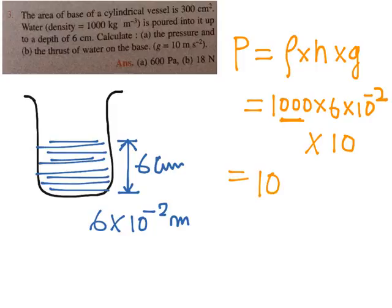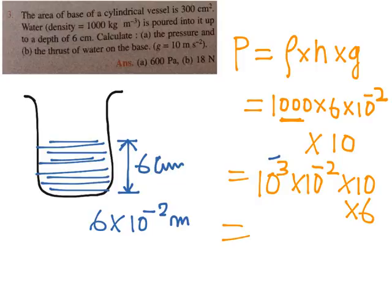So we have 10 to the power 3 into 10 to the power minus 2 into 10 into 6. Using the law of indices, 10³ into 10⁻² gives 10¹, plus another 10¹ from g, giving 10². So 10² into 6 equals 600. The unit of pressure is Pascal, so the pressure is 600 Pascal. This solves the first part: we need density, height, and acceleration due to gravity.